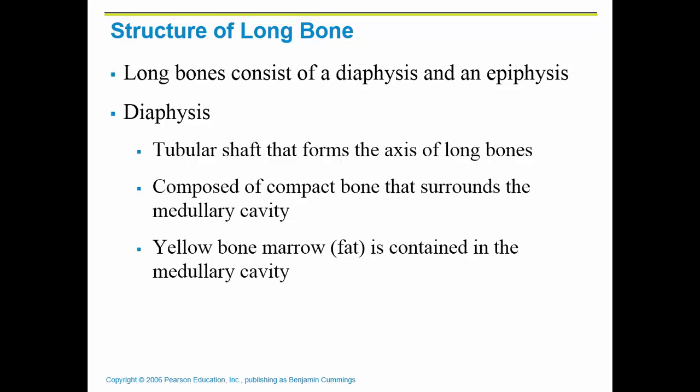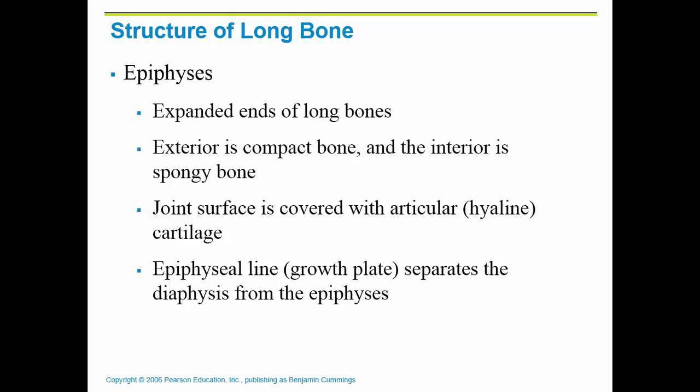There are two different types of bone marrow in humans. Yellow bone marrow is basically fat — a storage place for fat — contained in the medullary cavity. At the epiphyses of a long bone, those expanded larger ends, the exterior is compact bone and the interior is spongy bone with trabecula.